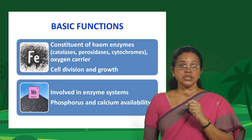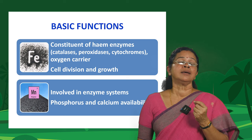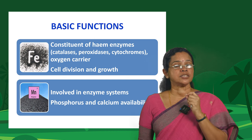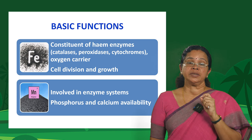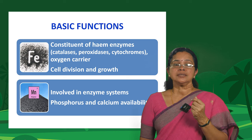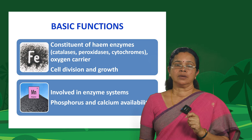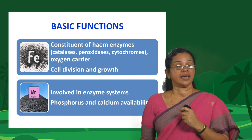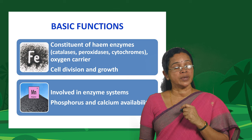Micronutrients are required only in very small quantities, but they are very crucial in many important biochemical reactions inside plants. Iron was the first element recognized as a micronutrient. It is a constituent of heme enzymes — plants have catalases, peroxidases, and cytochromes — all heme enzymes. Iron also acts as an oxygen carrier and is involved in cell division and growth.